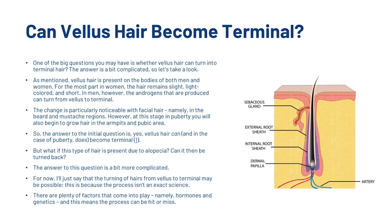So the answer to the initial question is yes — vellus hair can, and in the case of puberty, does become terminal. But what if this type of hair is present due to alopecia? Can it then be turned back? The answer is a bit more complicated. The turning of hairs from vellus to terminal may be possible, because the process isn't an exact science. There are plenty of factors that come into play, namely hormones and genetics, and this means the process can be hit or miss.